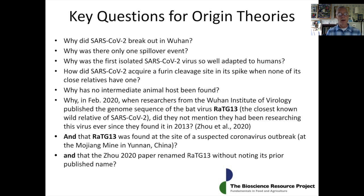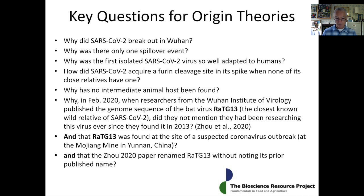More specific to the Mojiang Miner theory: when researchers from the Wuhan Institute of Virology published the genome sequence of RATG13 — the closest known wild relative of SARS-2 — did they not mention that they had been researching this virus since they found it in 2013? Why did they also fail to mention that this virus was found at the site of a suspected coronavirus outbreak, the Mojiang mine? And why did they rename RATG13 without noting its prior published name? All of these activities appear to be actions designed to hide the connections between the outbreak, SARS-2, and RATG13.